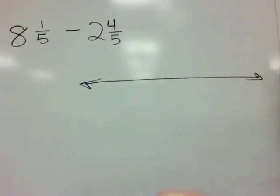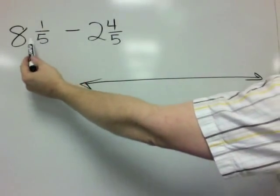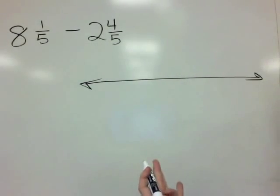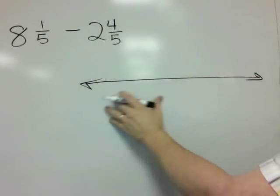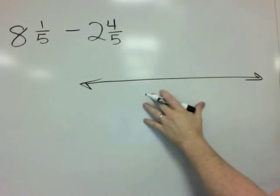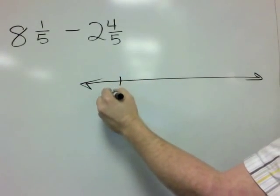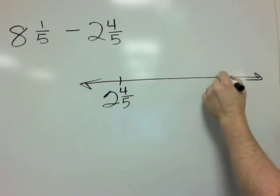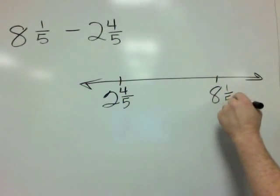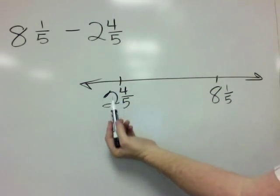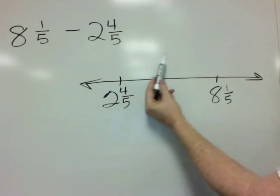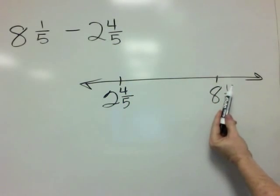In this problem, both numbers are mixed numbers, but it's still the same exact idea. We're going to put these numbers on an empty number line. 2 and 4 fifths is somewhere on the left, and 8 and 1 fifth is somewhere on the right. Our job is to figure out what is the distance from 2 and 4 fifths up to 8 and 1 fifth.